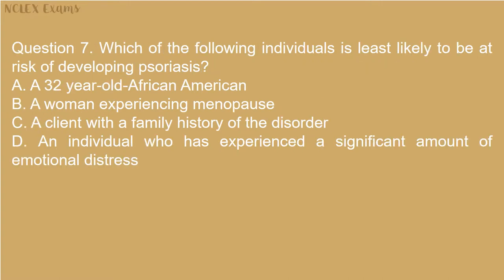Question 7. Which of the following individuals is least likely to be at risk of developing psoriasis? A. A 32-year-old African-American. B. A woman experiencing menopause. C. A client with a family history of the disorder. D. An individual who has experienced a significant amount of emotional distress.